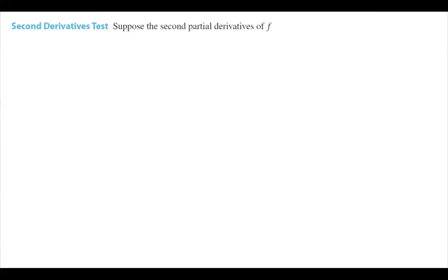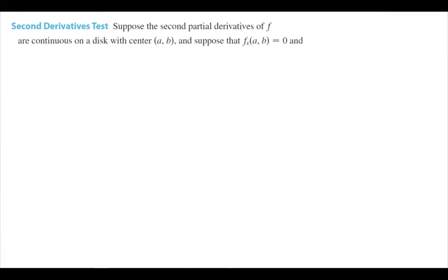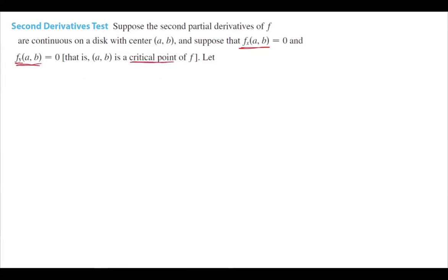Just as we had the second derivative test for one variable, we have it for two variables. Suppose the second partial derivatives of f are continuous on a disk centered at (a, b), and suppose the first partial derivatives with respect to x and y at (a, b) are both zero — meaning (a, b) is a critical point. We define the discriminant D at (a, b) as: D = f_xx · f_yy − (f_xy)², evaluated at (a, b). We use D to determine whether the function has a maximum or minimum at the critical point.